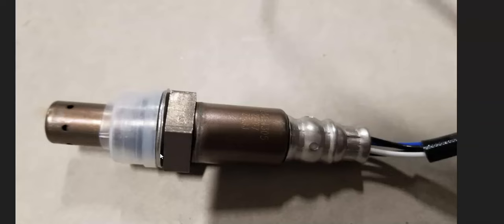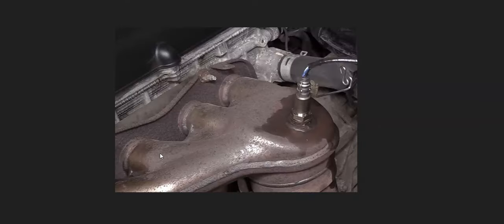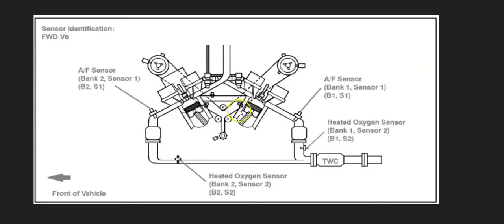The next thing that can cause a P0172 is an oxygen sensor. The oxygen sensor reports back to the onboard computer how much oxygen has been burnt off during combustion. If there's a problem, it could be sending bad data back. Usually the sensor that causes this problem is the Bank 1 sensor 1 upstream oxygen sensor. For example, on a 2007 Camry with a 3.5-liter V6, Bank 1 sensor 1 would be right here.